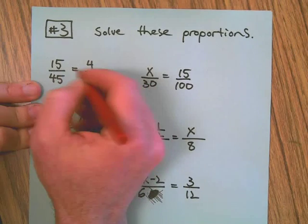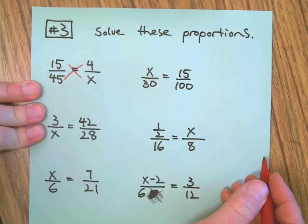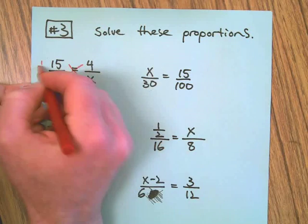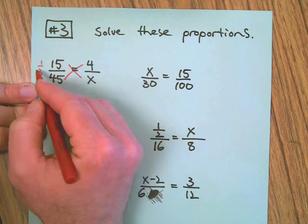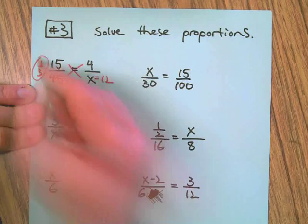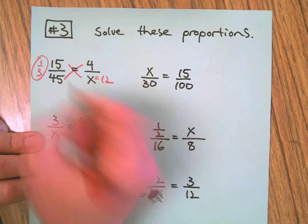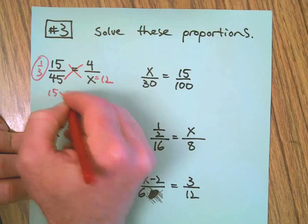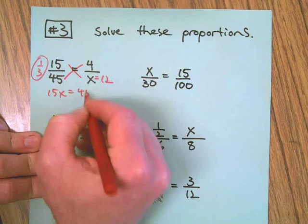We're just going to do cross multiplying here. You can recognize that this is one-third by the way, so if you see that then you can see that X is going to equal 12 because they all equal one-third. But if we want to cross multiply, you'd go 15 times X on one side, 45 times 4 on the other side.